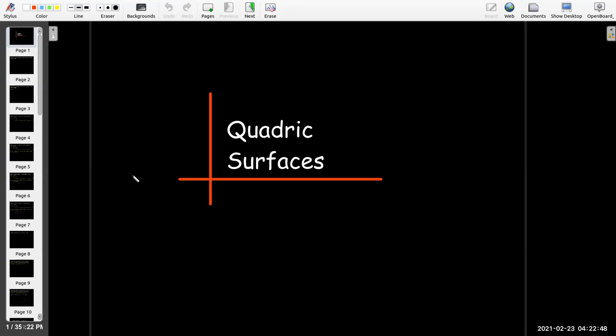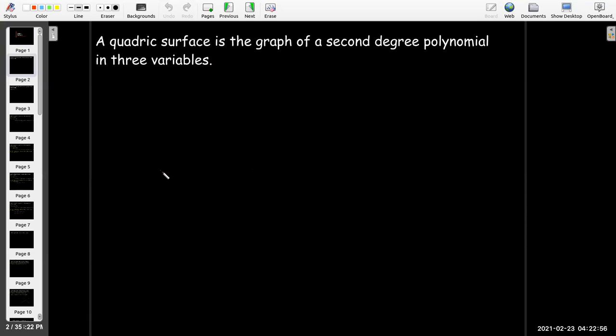In this short video, we're going to talk about quadric surfaces. So what is a quadric surface? It's kind of like the three-dimensional equivalent of a conic section. It's the graph of a second degree polynomial in three variables.